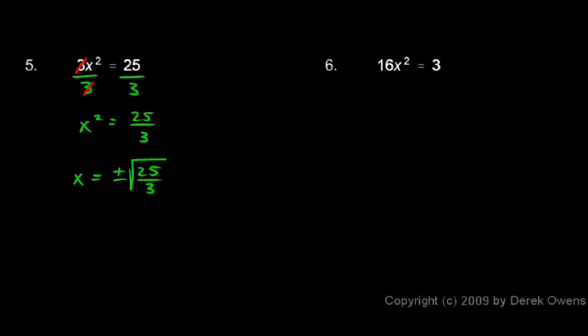I can split that into one fraction with two radicals — plus or minus the square root of 25 over the square root of 3. Now the square root of 25, that's easy. I'm just going to write that as a 5. So I'll write this as plus or minus 5 over the square root of 3.